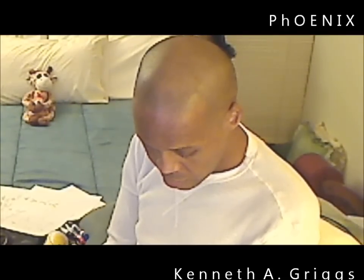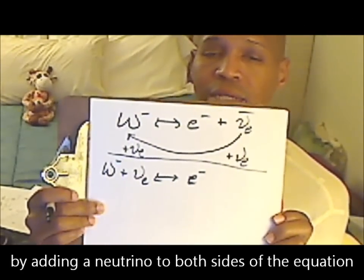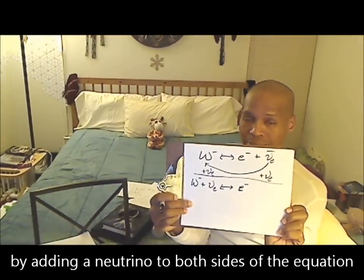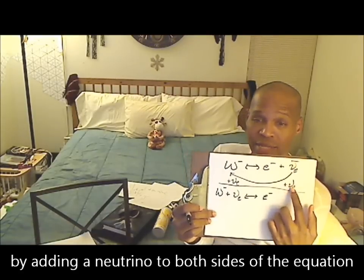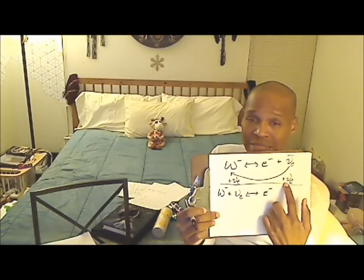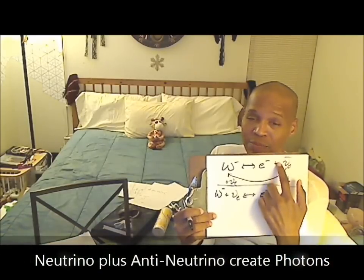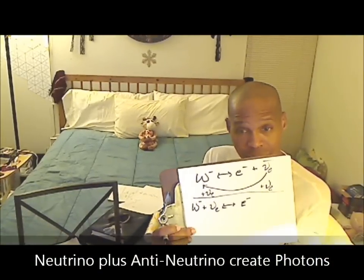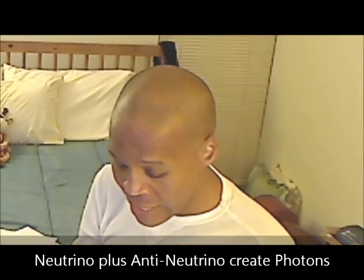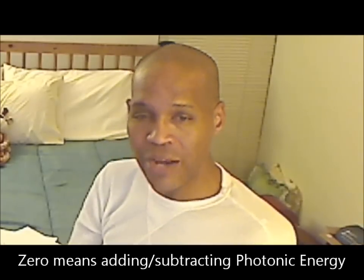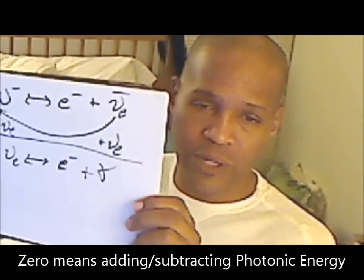So we have W minus plus the regular electron neutrino yields the electron. What's really going on is I'm adding a neutrino to both sides. Now technically speaking, if I'm actually adding a neutrino to this side, these two things don't cancel out to zero — that doesn't work that way in particle physics. A neutrino plus its antiparticle actually produces photons. So technically I really need to add some photonic matter on that side.